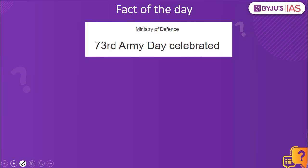Now let's look into the fact of the day, which is about Army Day. Army Day is celebrated every year on the 15th of January at army command headquarters. It was on this day — January 15th, 1949 — that the Indian Army got its first Indian Army Chief, Lieutenant General K.M. Cariappa. He was appointed as Commander-in-Chief of the Indian Army on January 15th, 1949, taking over power from General Sir Francis Butcher, who was the last British Commander-in-Chief of India. That is why we have taken up this fact of the day from the PIB.